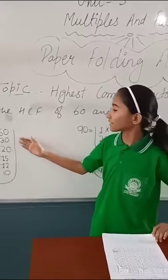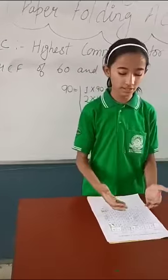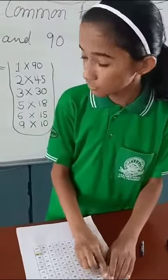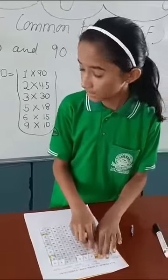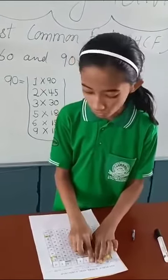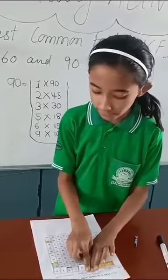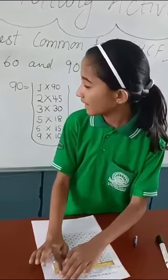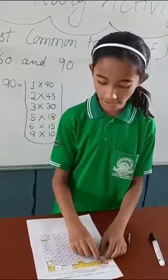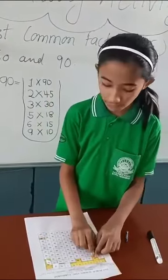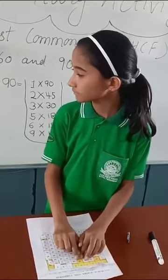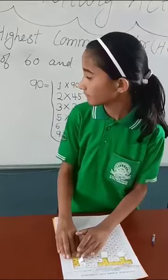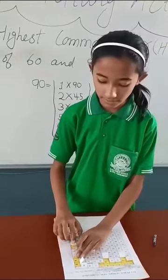These are the factors of 60. Now I am folding the factors of 60 here. 1, 2, 3, 4, 5, 6, 10, 12, 15, 20, 30, and 60. These are the factors.